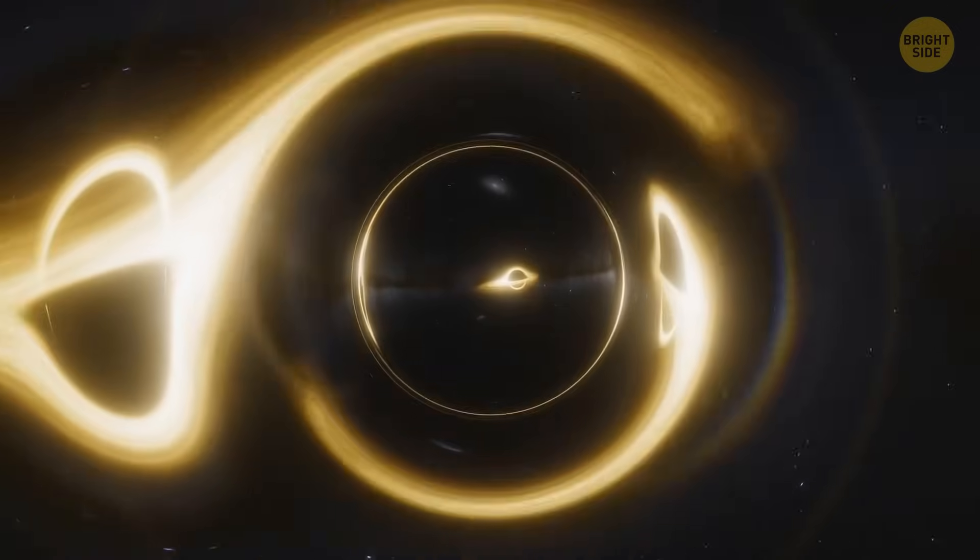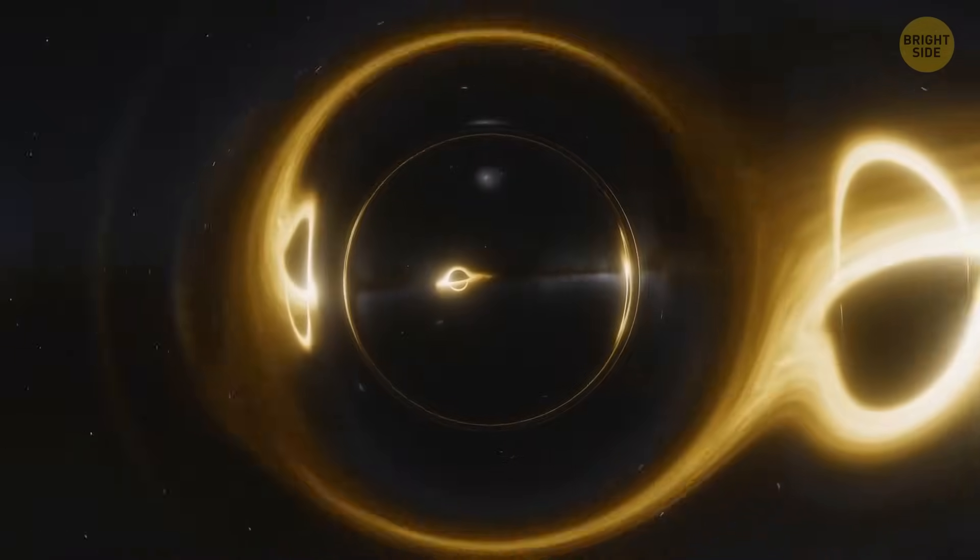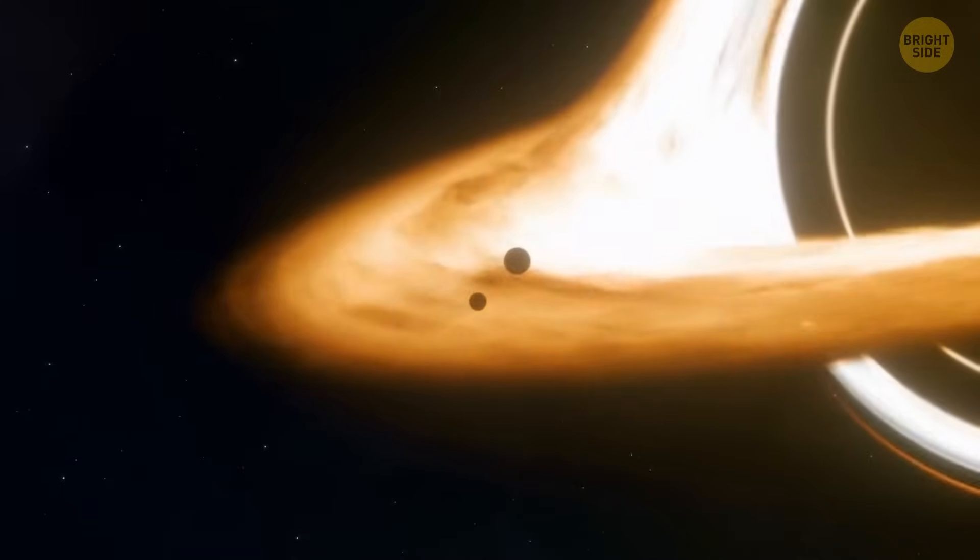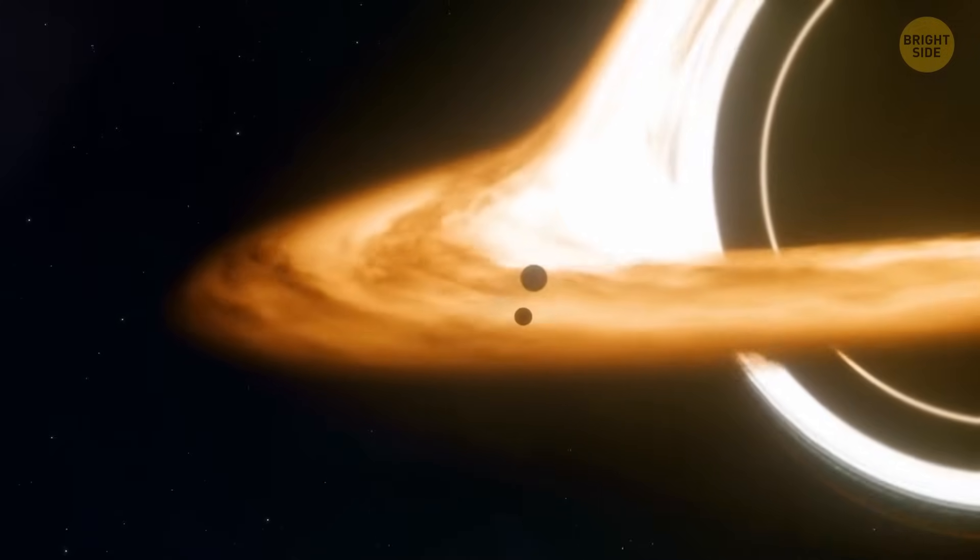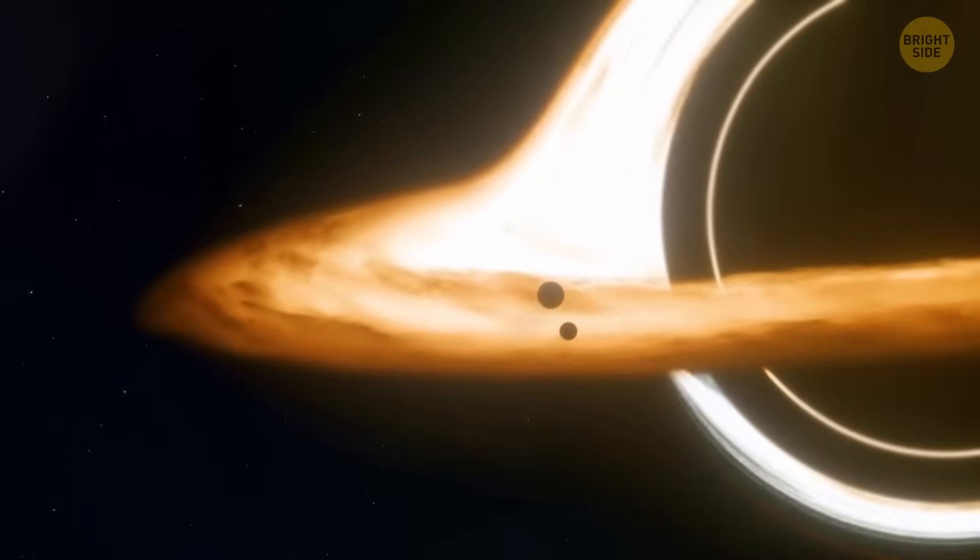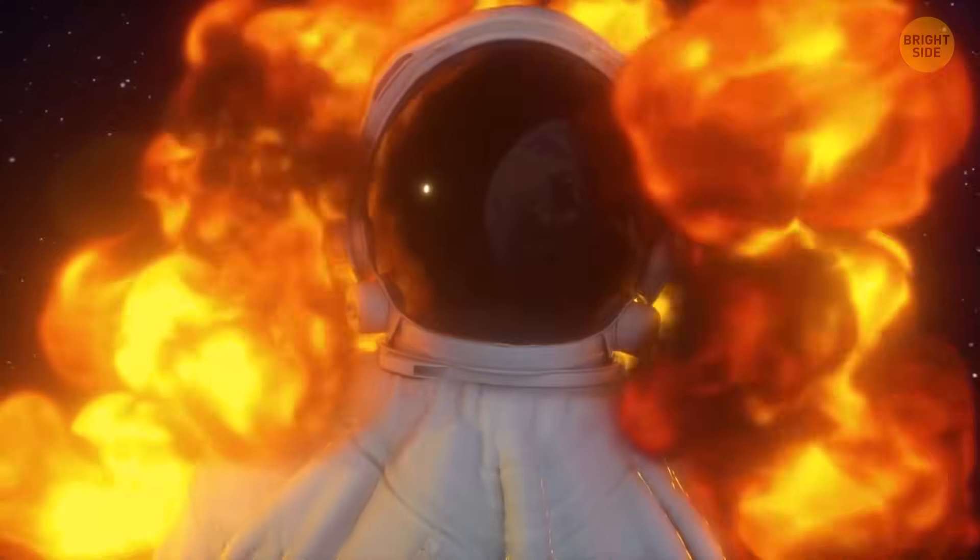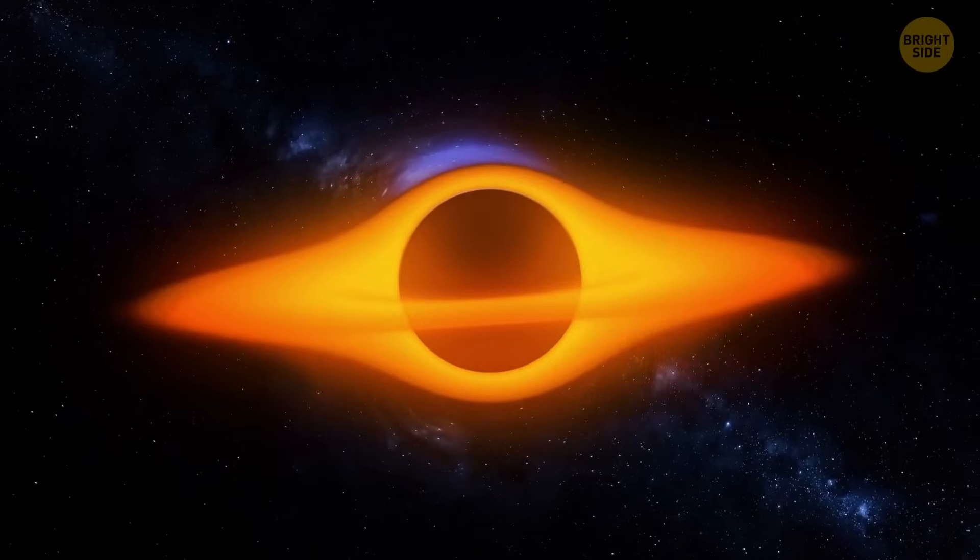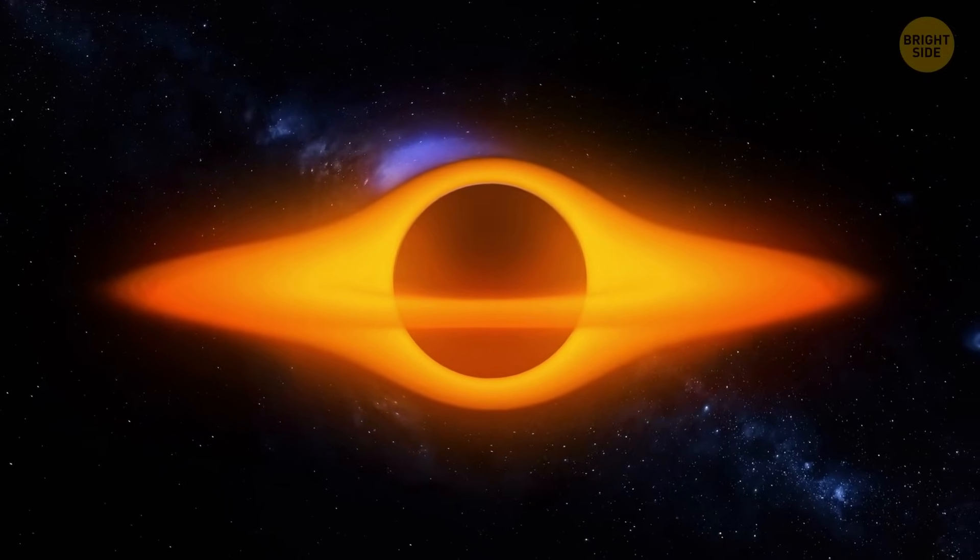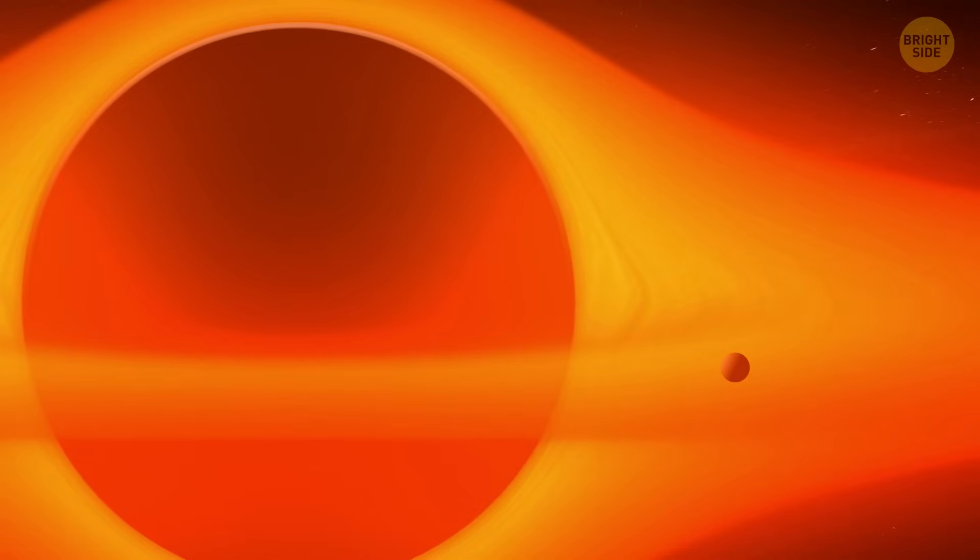Black holes come in different sizes, from small ones that are only a few miles wide, to supermassive ones that are billions of times the mass of the Sun. Most of them are formed by the collapse of massive stars. After the black hole is born, it starts to grow in size by eating everything in its path. And if two or more black holes collide with each other, they can merge into one enormous cosmic monster in a terrifying dance.